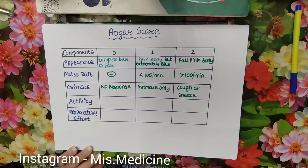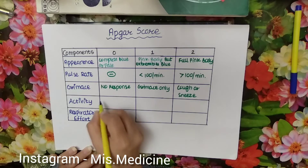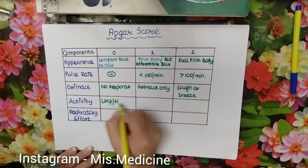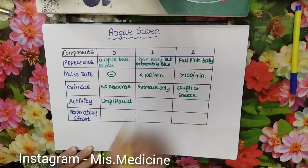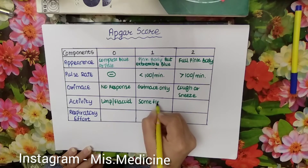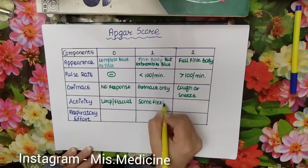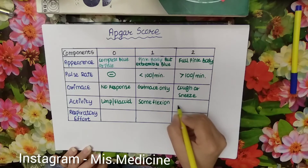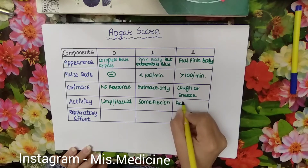Next is activity. If the baby is limp or flaccid, the score is 0. If the baby has some flexion, the score is 1. If the baby is actively moving, the score is 2.